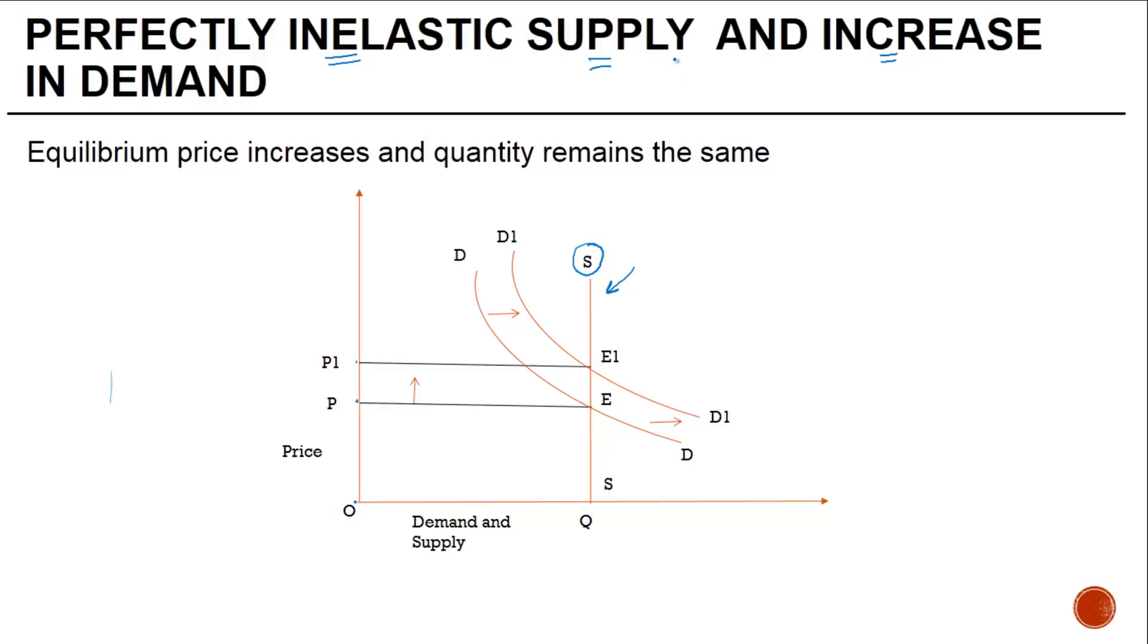For example, if the demand was 10 units and the supply was also 10 units, the demand has now increased from 10 to 20 but the supply remains the same. In that case, because there are more number of buyers who are chasing a lesser number of commodities, they will be willing to pay a higher price, and therefore the price is going to increase.